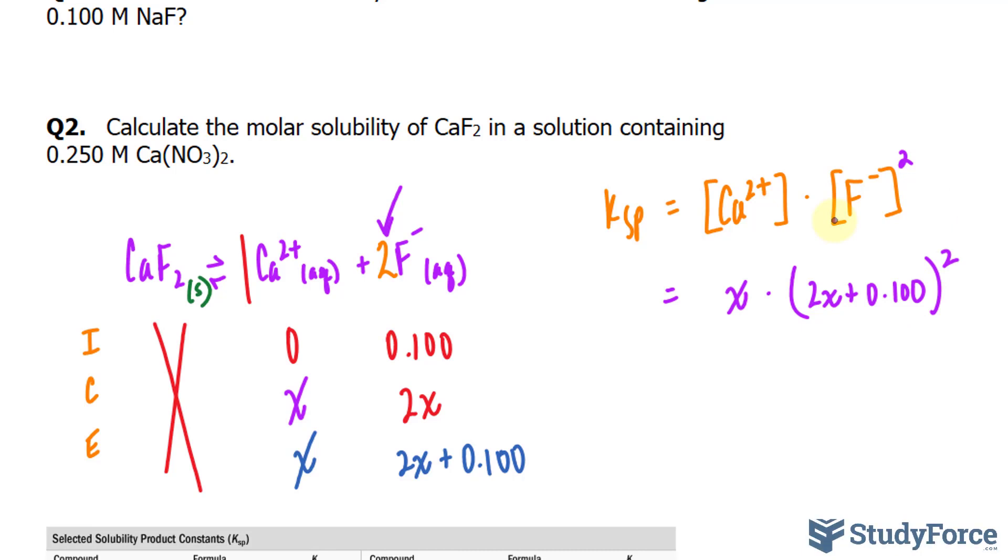As you can see on the right side, if you're mathematically savvy, if you were to expand the right side of this mathematical equation, you would end up with a cubic function. And cubic functions are hard to solve. So we can make the assumption that since Ksp is so small, the value here being added to 0.100 is also very small. And because it's so small, it's almost negligible.